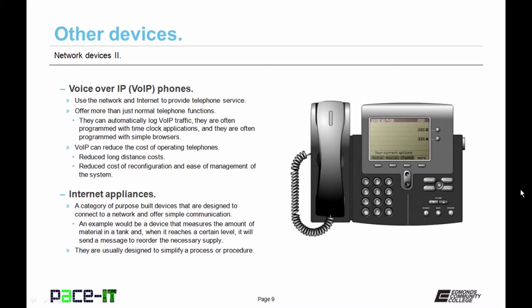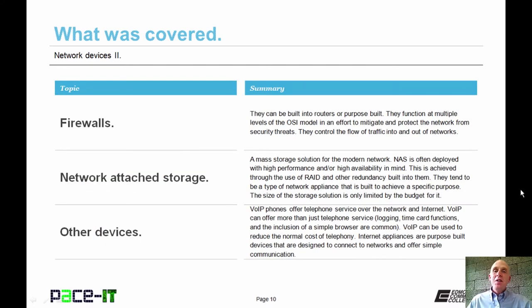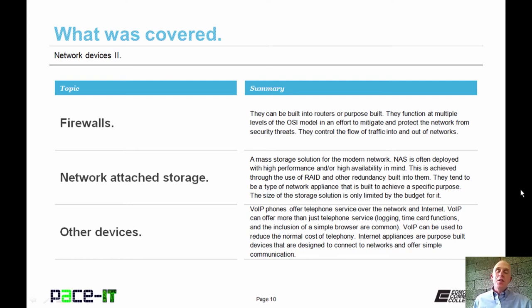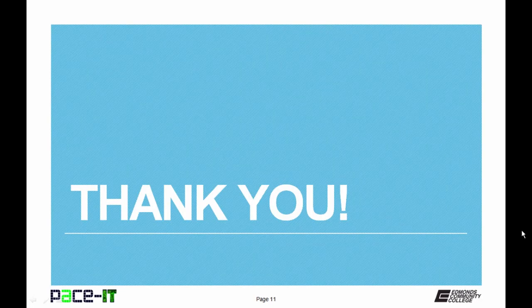There's a special type of network device called an internet appliance. These are a category of purpose-built devices designed to connect to a network and offer simple communication. An example would be a device that measures the amount of material in a tank, and when it reaches a certain level, it will send a message to reorder the necessary supply. They are usually designed to simplify a process or a procedure. That concludes this session on Network Devices, Part 2. We talked about firewalls, network-attached storage, and some other devices you'll find on the network. On behalf of Pace IT, thank you for watching this session.